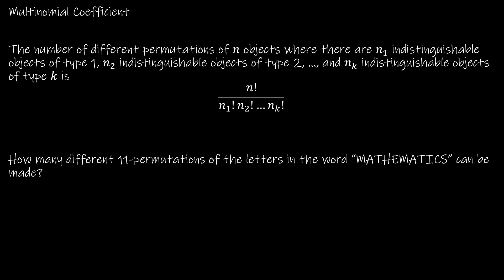That is exactly what we want to do — use what is called a multinomial coefficient. Your textbook doesn't call it a multinomial coefficient until the end of the chapter in the really difficult questions. Essentially, if we have n objects where there are n1 indistinguishable objects of type 1, n2 indistinguishable objects of type 2, and so on, then we model that using n factorial divided by the factorials of how many objects of each type are the same. It's not important to write the 1-factorials, since 1 factorial equals 1.